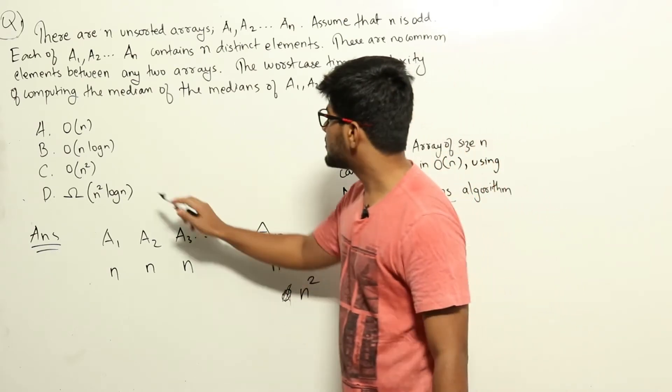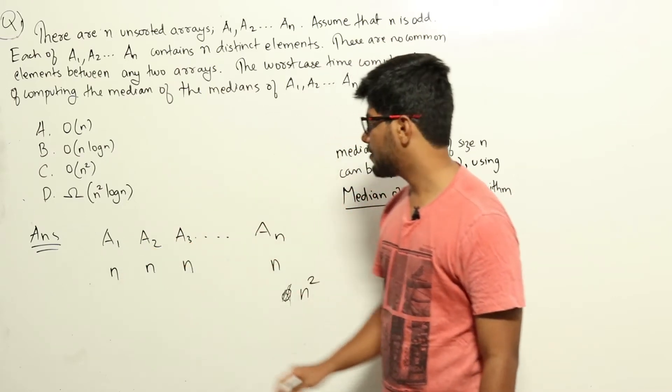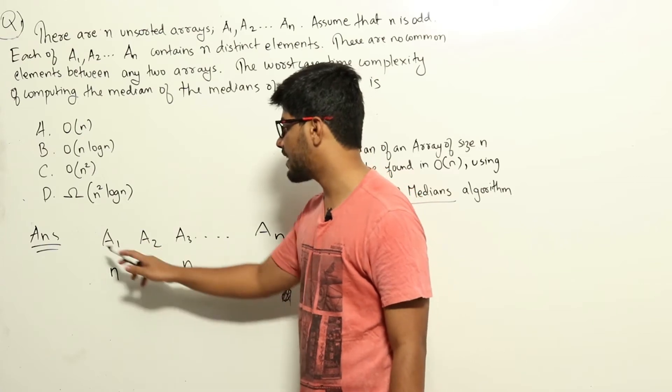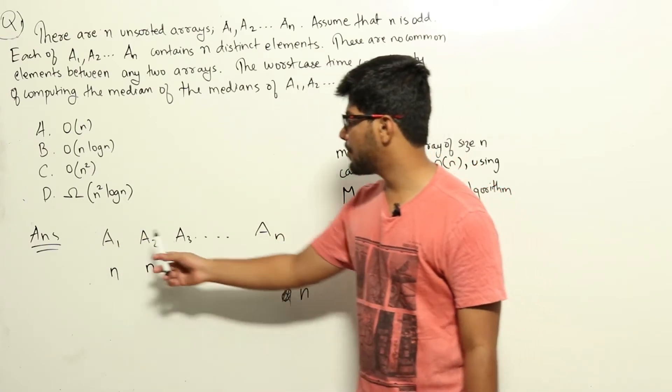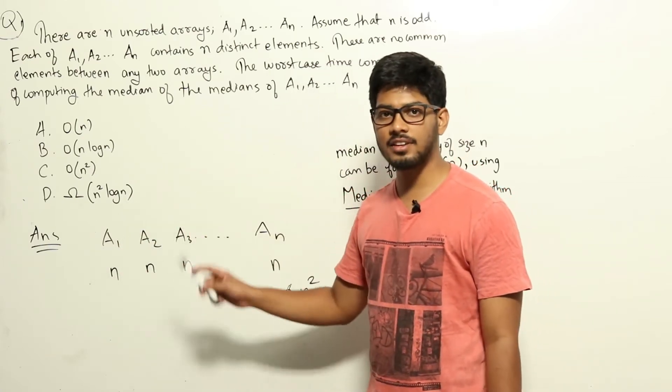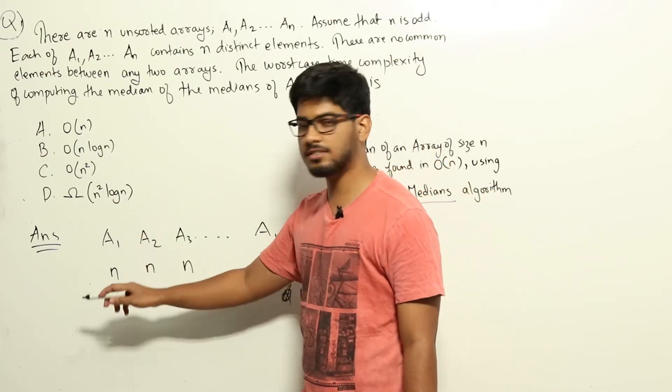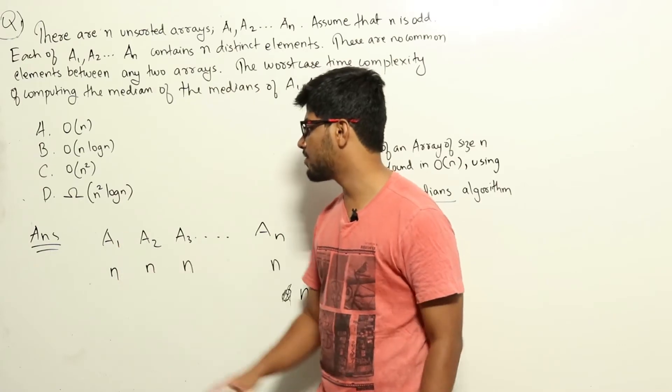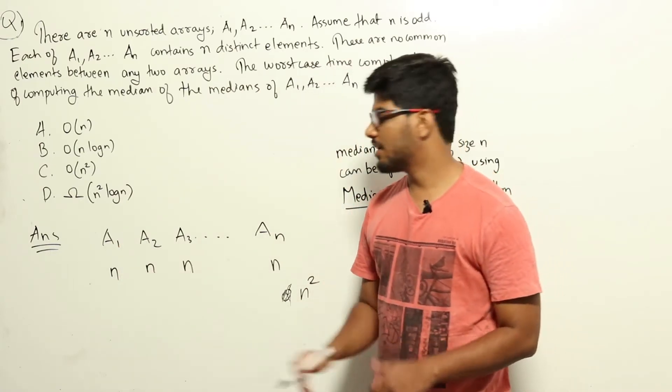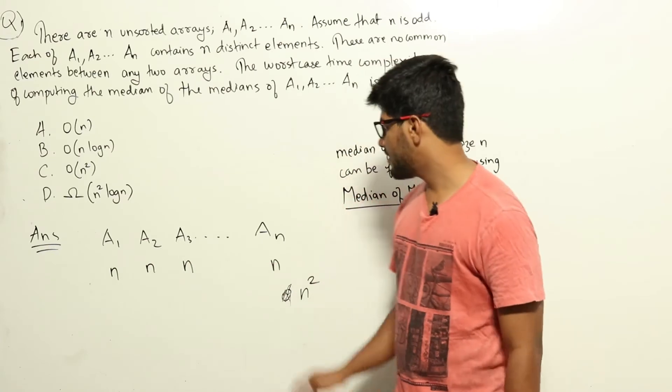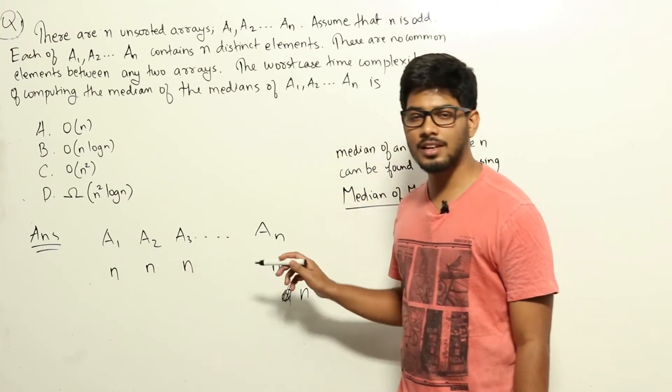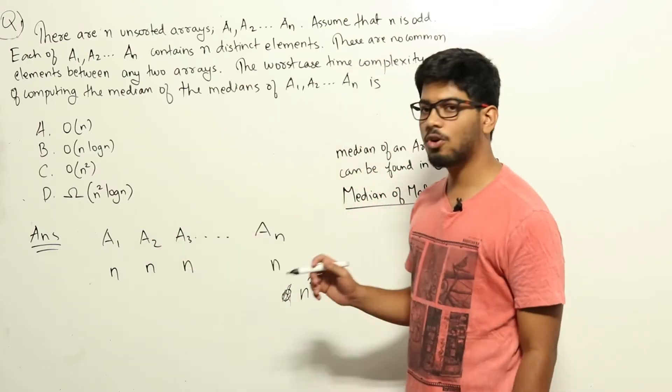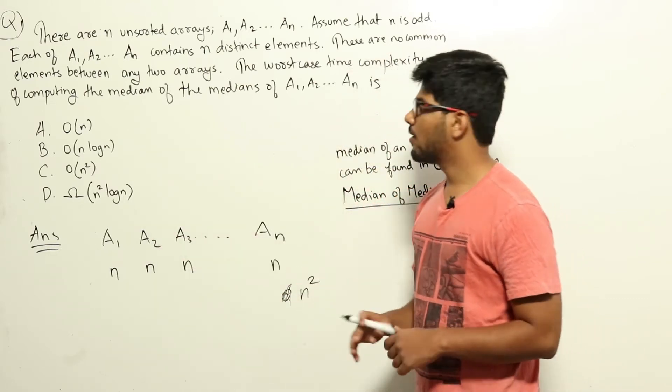Now, it is said that each of these arrays are unsorted. Which means that in order to find the median of array a1, let's say, a1 is unsorted. So in order to find the median, we need to read every element in a1 at least once. If it was sorted, we could have directly gone to the middle of the array and got the median. But since it is unsorted, at least we will need to read all the elements once. Meaning, there are total n square elements and we will need to read all of these elements at least once in order to find medians and do the calculation. So, complexity has to be at least of n square.